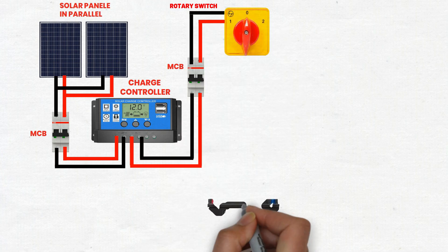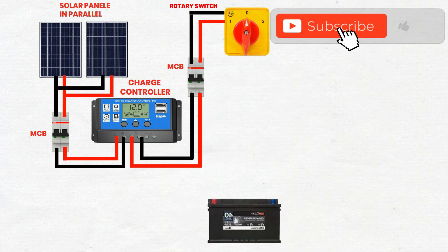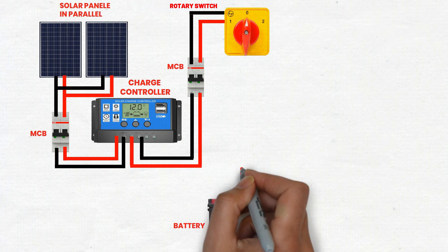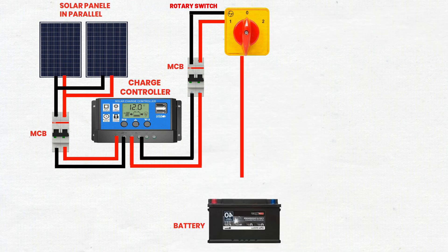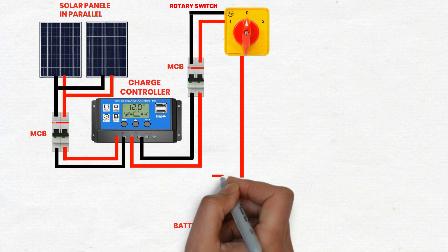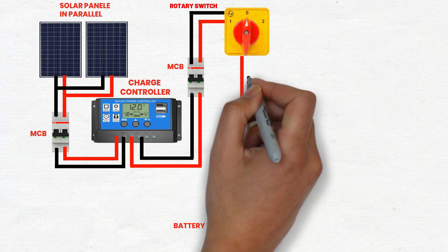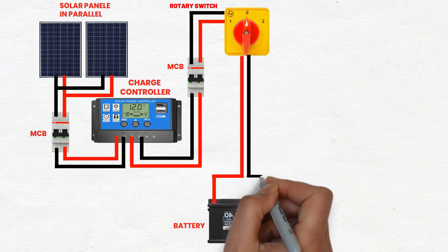Step 5: Connect rotary switch to battery. Use cables to connect the output terminals of the rotary switch to the battery terminals. Ensure correct polarity. This allows the regulated power from the solar charge controller to charge the batteries. Batteries store the electrical energy generated by the solar panels for use when there is no sunlight.